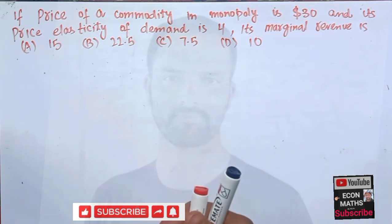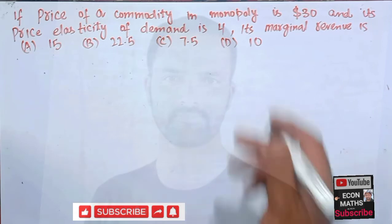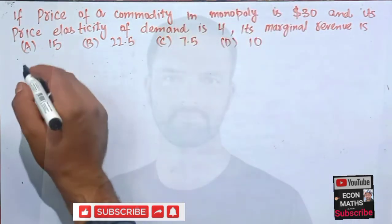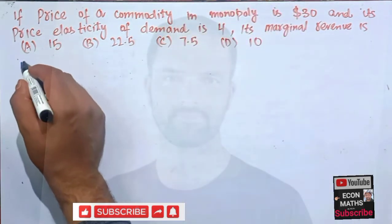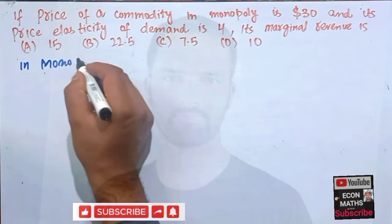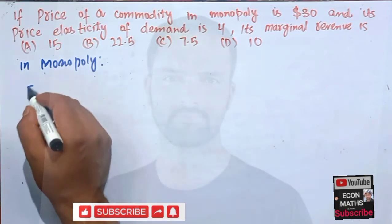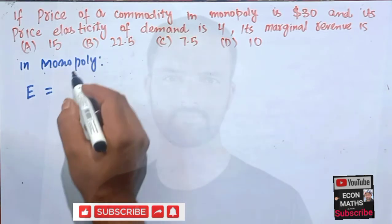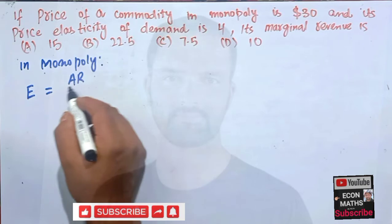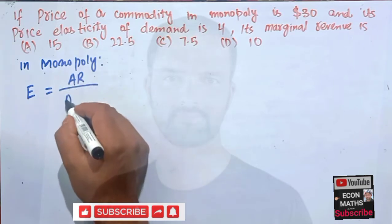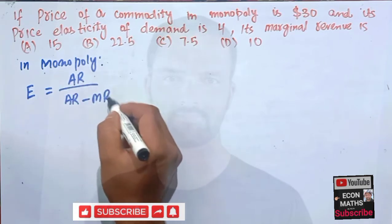Actually we have the relationship in monopoly. In monopoly we have the relation that elasticity E is equal to average revenue divided by average revenue minus marginal revenue. This is the relationship between price elasticity of demand, average revenue, and marginal revenue.